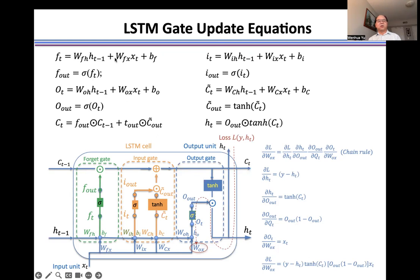Here are the corresponding gate equations. For the forget gate, we use the previous hidden state and the current input together as the input to a nonlinear activation function, and use this output as the gate to control the information from the previous cell.